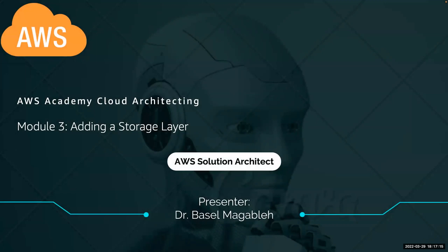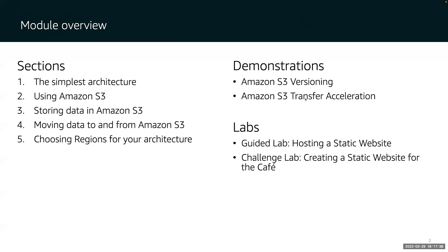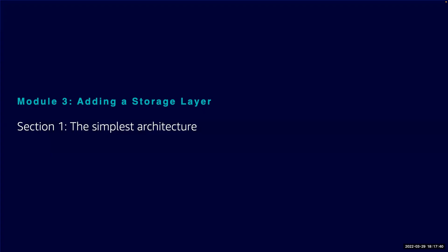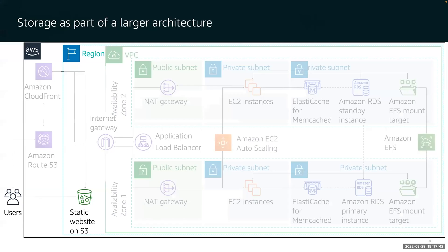In this class we are going to look at adding a storage layer in AWS for a solution architect. We are going to study this architecture every lesson in order to build a highly available, highly scalable architecture. Today we are going to learn how we can host a static website in Amazon S3.